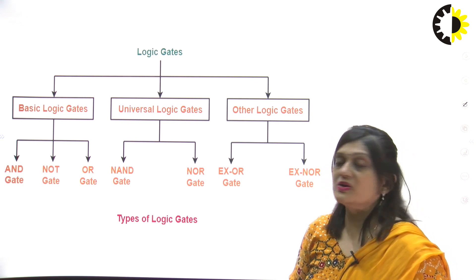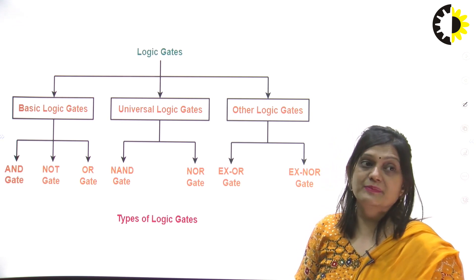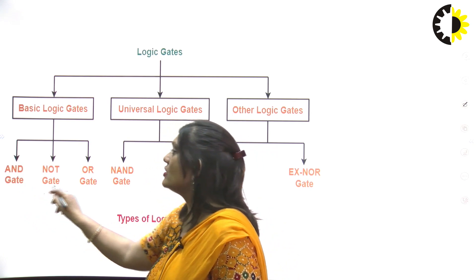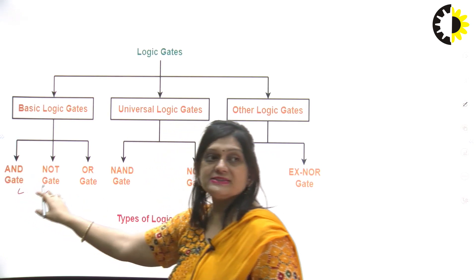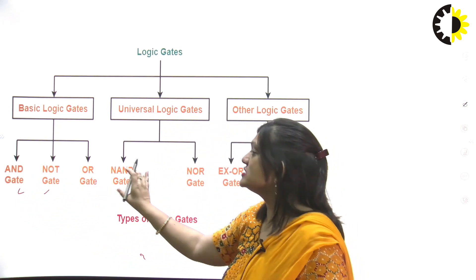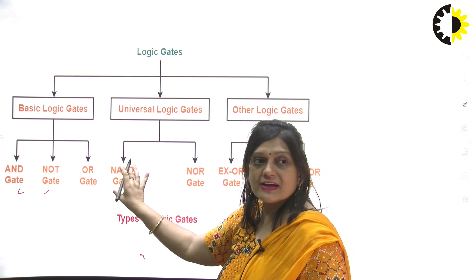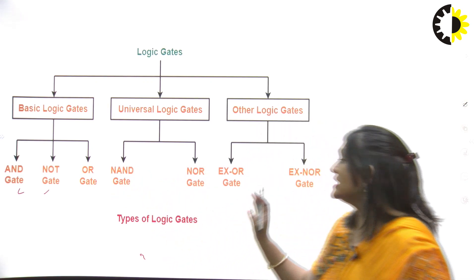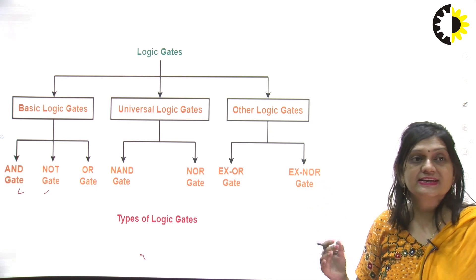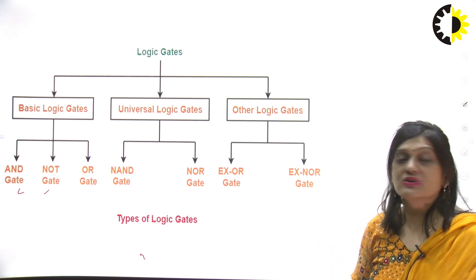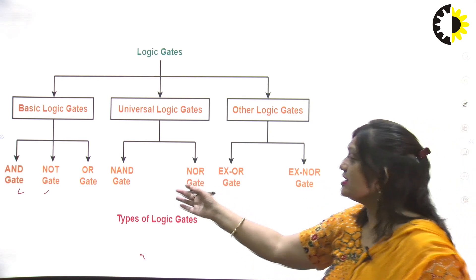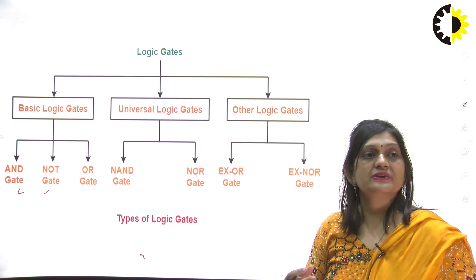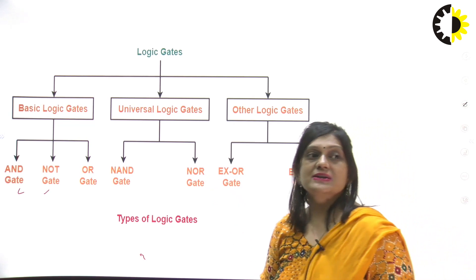Why are NAND and NOR called universal gates? Because all other gates — AND, NOT, OR — can be designed using only a NAND gate or only a NOR gate. XOR and XNOR gates can also be designed using only NAND or only NOR gate. That is why NAND and NOR are called universal gates.